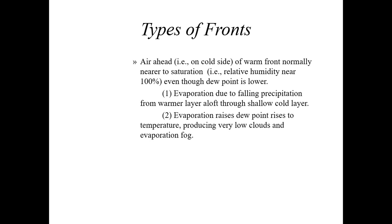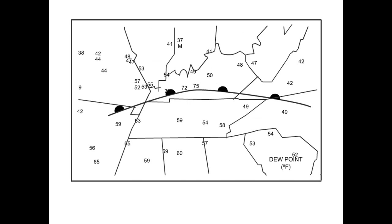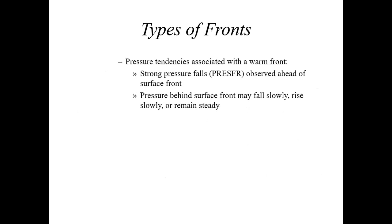This is mainly due to evaporation of moisture as precipitation falls north of the warm front through the shallow cold layer. That evaporation is going to increase the dew point temperature and produce very low clouds and at times evaporation fog. So if you're north of a warm front, you typically see low clouds, a low dull gray cloud mass, stratiform clouds. With pressure tendencies associated with the warm front, you would notice strong pressure falls right ahead of the surface warm front before it moved through, and then pressure behind the surface warm front may fall slowly or even rise slowly briefly and then remain steady.